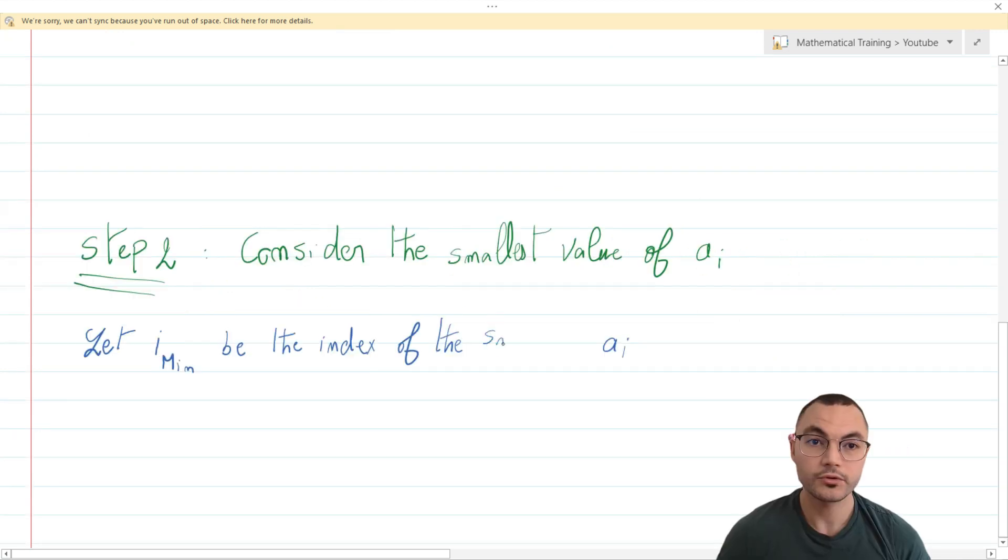Moving to step number two, which is similar to step number one. The only difference is that we'll consider the smallest value of ai. Let i_min be the index of the smallest ai. For all i between 1 and n, this is equivalent to ai_min ≤ all ai's, which is equivalent to bi_min ≤ bi for all i between 1 and n, which implies that bi_min is the smallest value of all the bi's.